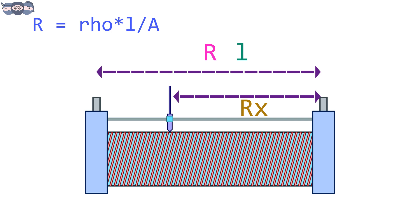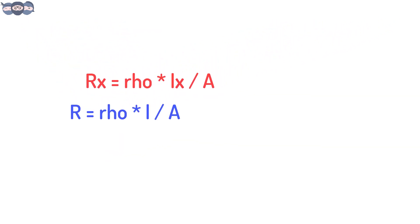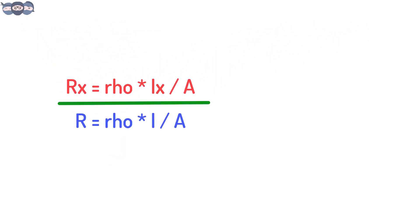Let the slider be located at a distance of Lx from a fixed point and let Rx be its corresponding resistance. From the formula, we get Rx equals ρ into Lx by A. Taking the ratio of Rx to R, we see that the ratio is equal to Lx to L.